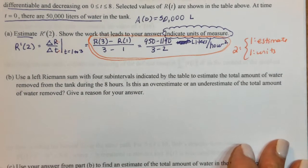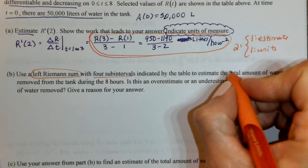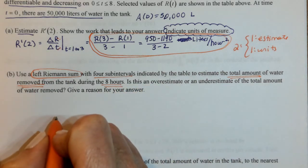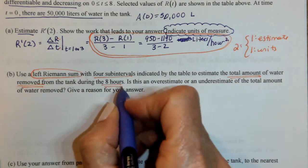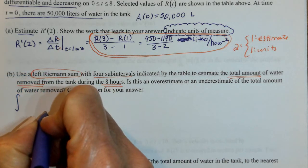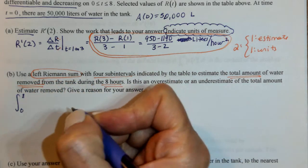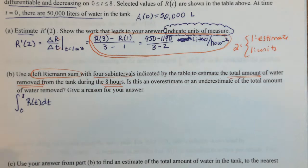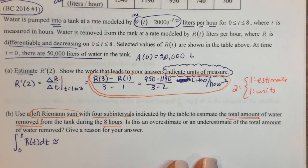Part B: Use a left Riemann sum with four subintervals indicated by the table to estimate the total amount of water removed during the eight hours. The total amount of water removed is the integral from 0 to 8 of R of T. Now we need to approximate this integral using a left Riemann sum.